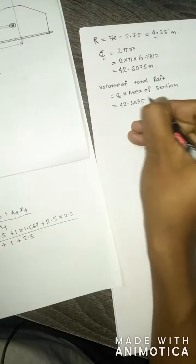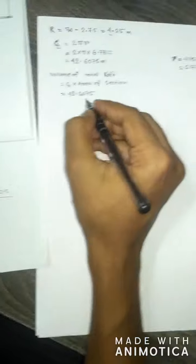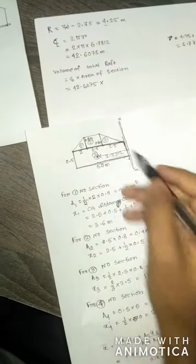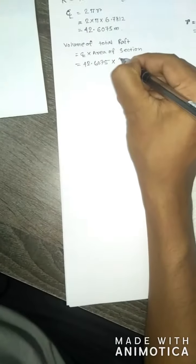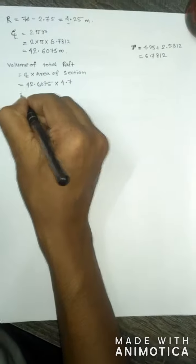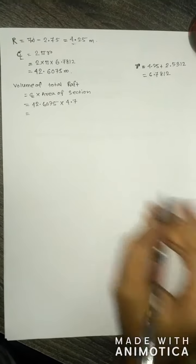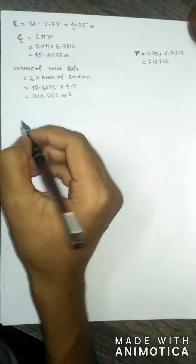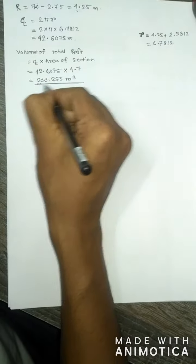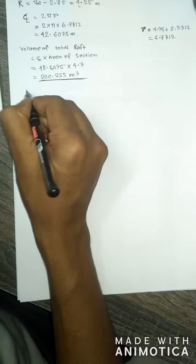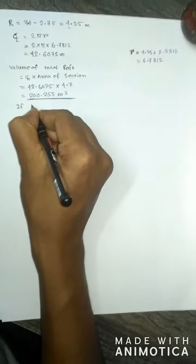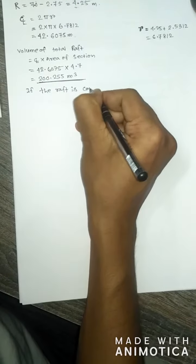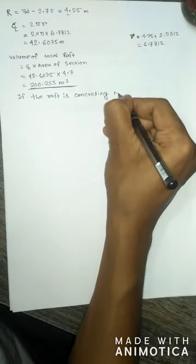We also determine the volume of the total section. Volume equals center line into area of section. Center line is 42.6075 meters, and area of total section is 4.7 m². So volume equals 42.6075 into 4.7 equals 200.255 m³.